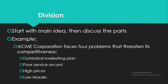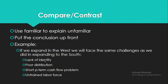In terms of division, start with the main idea and then discuss the parts. For example: 'Acme Corporation faces four problems that threaten its competitiveness: outdated market plan, poor service record, high prices, and low morale.' For comparison and contrast, use the familiar to explain the unfamiliar — for example, comparing urban life with rural life. You can also put the conclusion up front and then go into detail, such as: 'If we expand to the west, we will face the same challenges as expanding to the south: lack of identity, poor distribution, short-term cash flow problems, and an untrained labor force.'